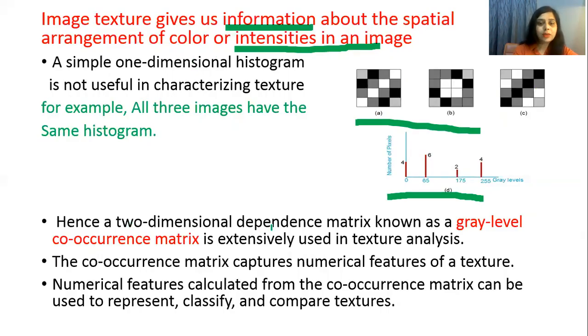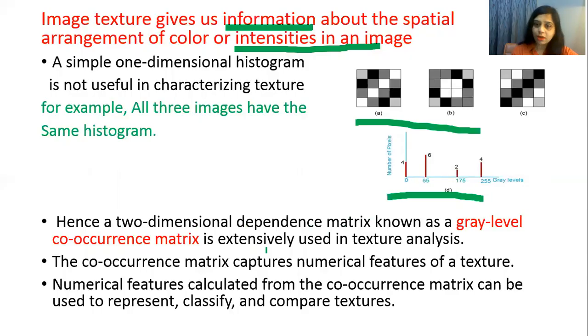That is the reason we cannot use the histogram for image texture analysis. Hence, a two-dimensional dependence matrix — known as the co-occurrence matrix — is extensively used for texture analysis.